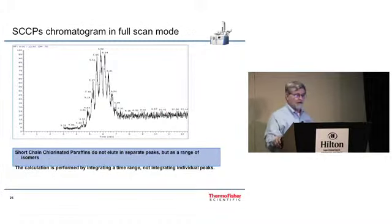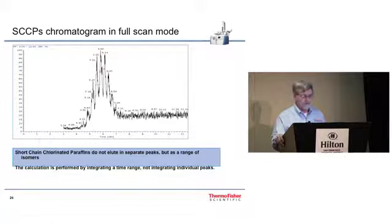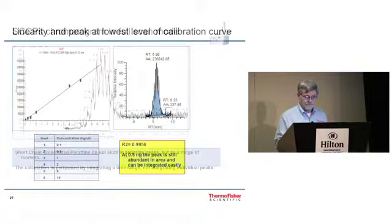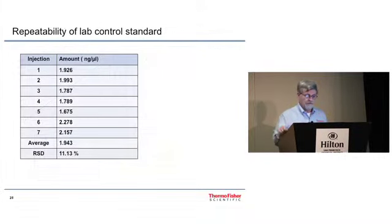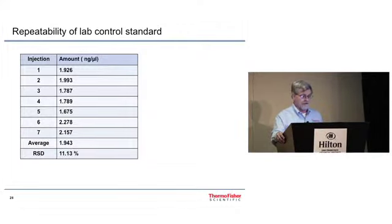Next, I want to talk about short chain chlorinated paraffins. They don't come off as one nice distinct peak but a certain time range. Here's a curve going from 0.1 nanograms per microliter up to 10. And you can see the integration over a period of about five and a half minutes. And here's a repeatability study done at 2 nanograms per microliter. Percent RSD was about 11%.